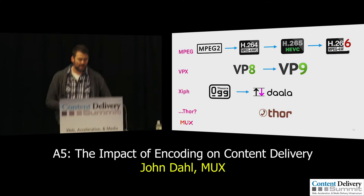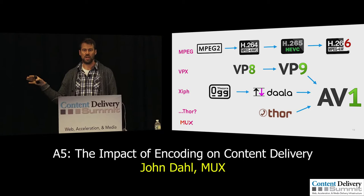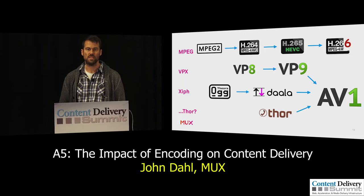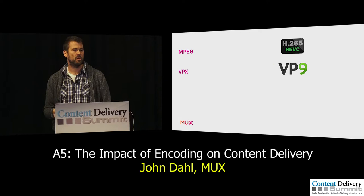The interesting thing with those bottom three codec trees is that they're all feeding into AV1, which is a next-gen codec that's really promising and exciting, but still honestly a few years out from really being ready for widespread use. So if you're talking about improving video quality today using next-gen codecs, you're talking about these two: HEVC and VP9.